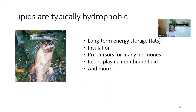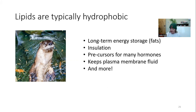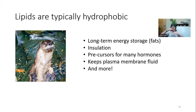Lipids are also used for insulation. In our little example here of our little sea otter, if you live in a watery environment where it's cold, you're going to get cold. So you need a little bit of a fat layer to keep you nice and warm. Lipids are also precursors for many hormones, and they keep our plasma membranes nice and fluid. If there's not enough cholesterol, the membrane breaks, all your cell contents spill out, and you're done. So we want it to be a little bit flexible.